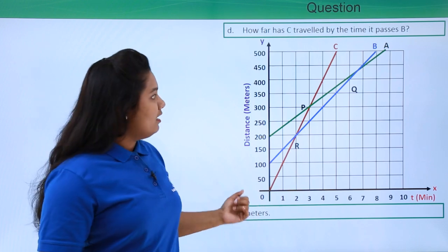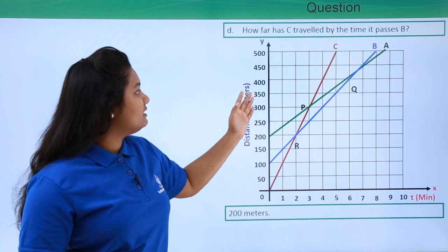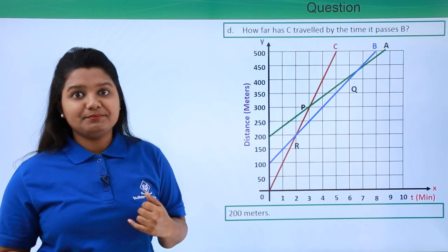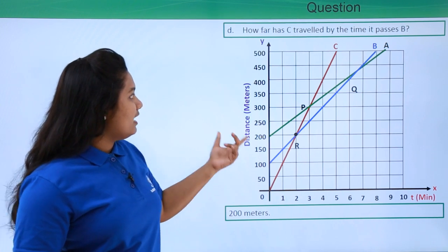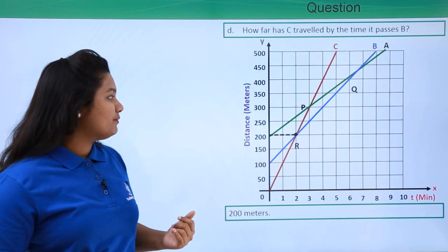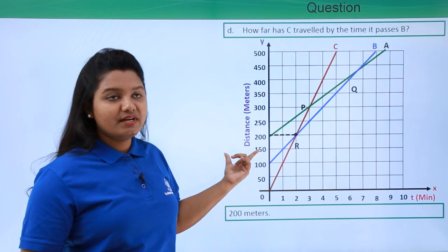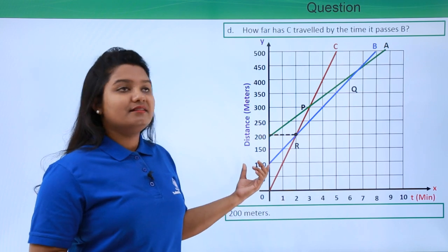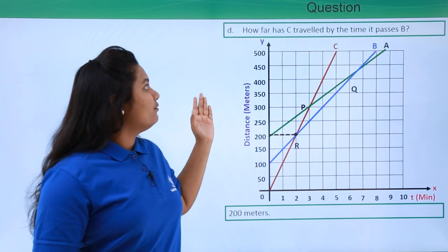Now, how far has C traveled by the time it passes B? The intersection point of C and B is point R. At this point we do the same thing — draw a perpendicular from point R to the y-axis. The point where it touches the y-axis gives us the answer: C has covered 200 meters by the time it passes B. So we have answered all four questions.